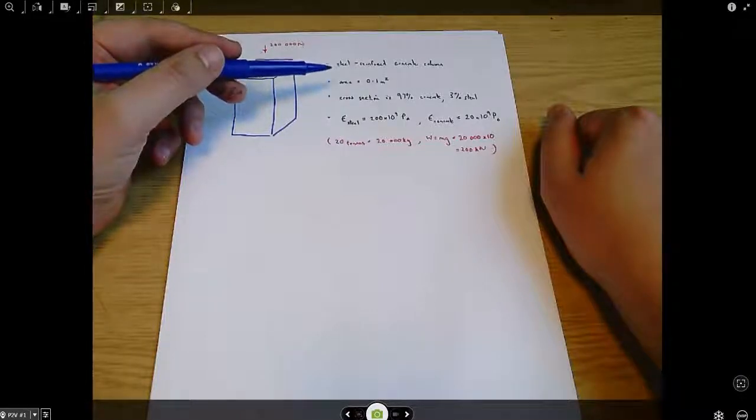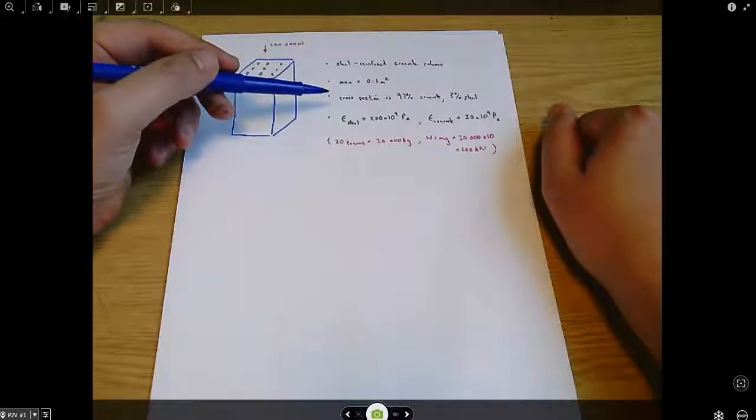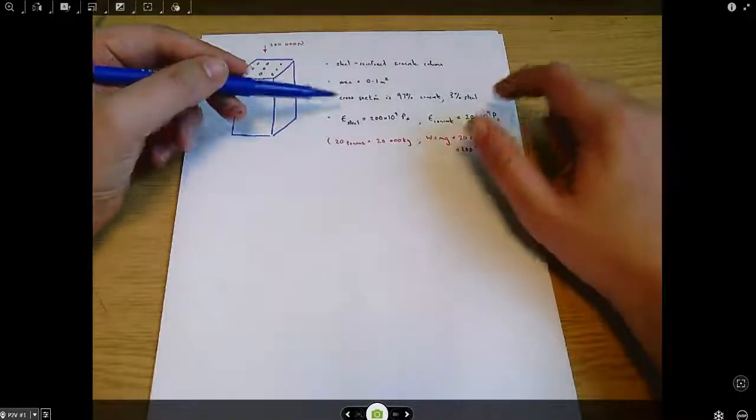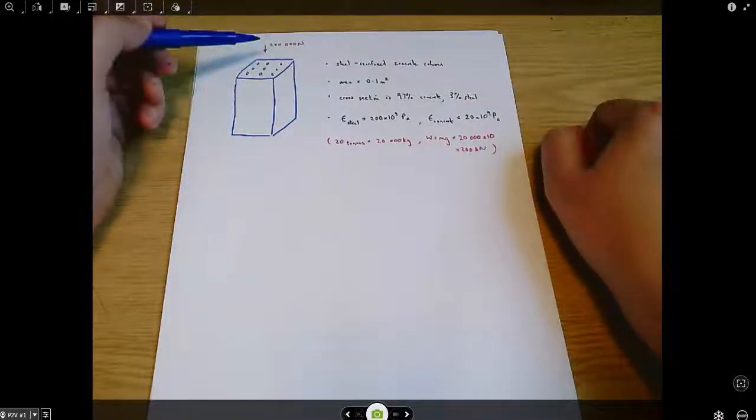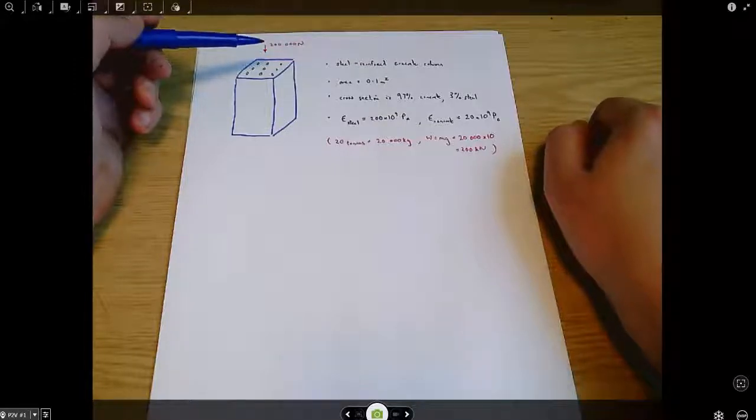It's got a cross-sectional area of 0.1 square meters. Of that cross-section, 97% is concrete and 3% is steel, and we know the Young's modulus for the steel and the concrete, and the whole thing is subjected to a compressive load of 200 kilonewtons.